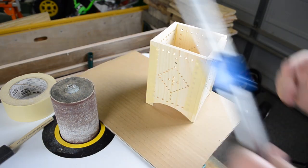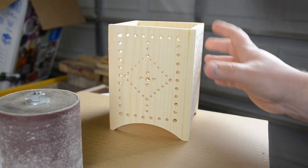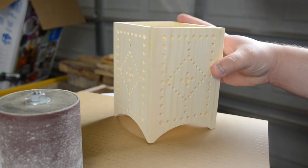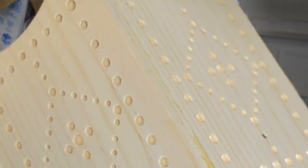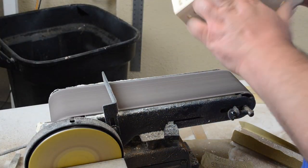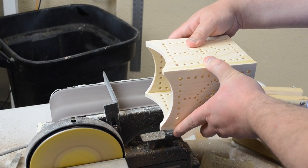Once the glue had dried I could remove the clamps. I then took the piece over to the belt sander to smooth out some of the joints and make them less visible.